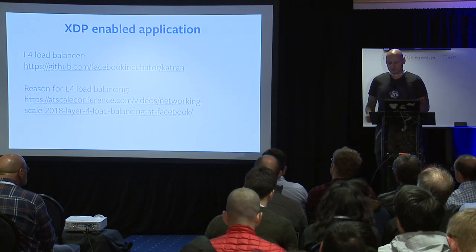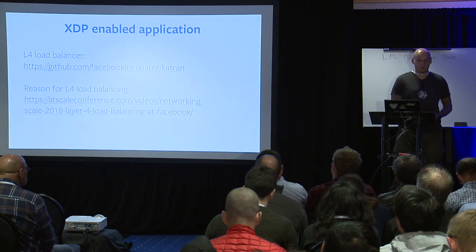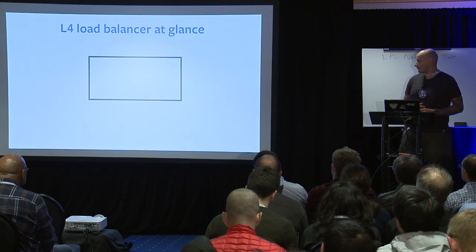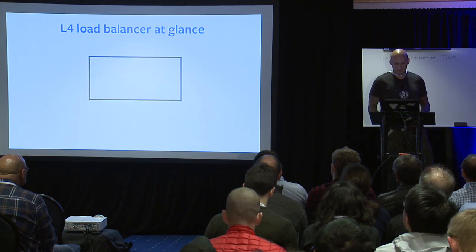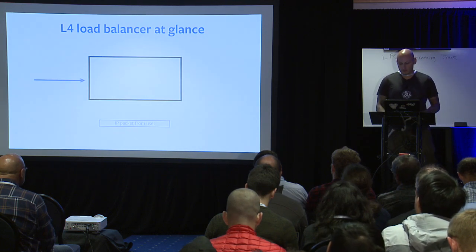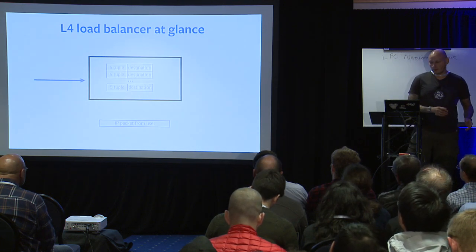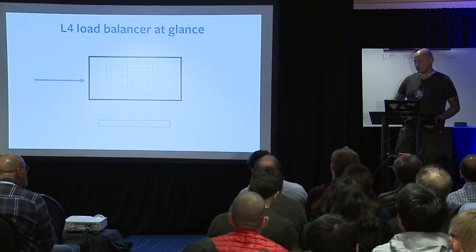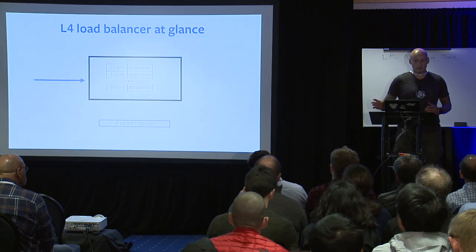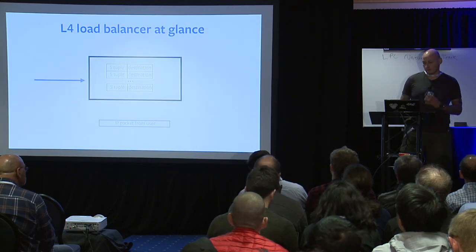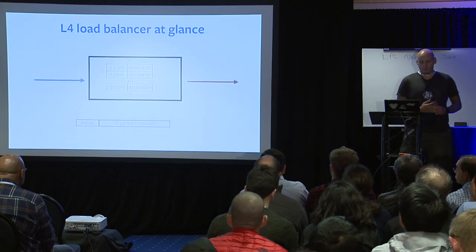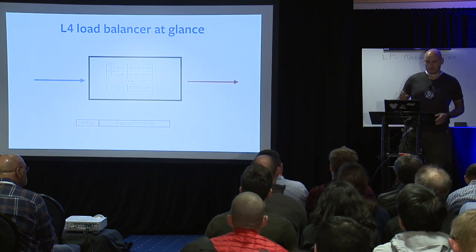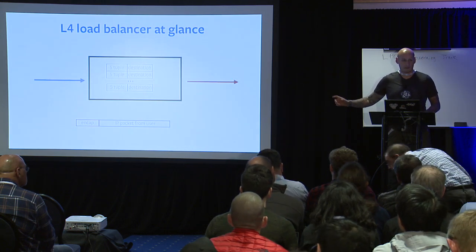This is not a layer 4 load balancing talk. What you need to know is that it's a black box: it receives traffic from the user, it's a stateful service with a state table using a five-tuple as the key and destination as the value. If there's a hit, you know where to send the packet; if there's a miss, additional logic updates the table and sends the packet to the backend. In our implementation we use IP-in-IP encapsulation.